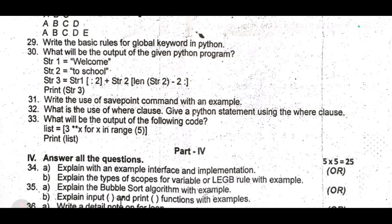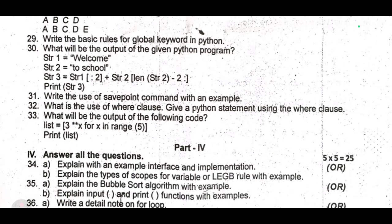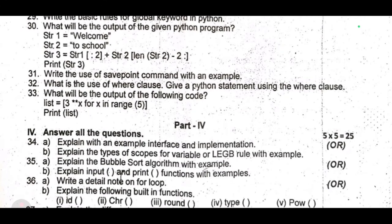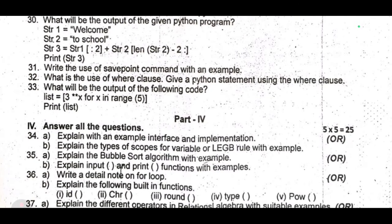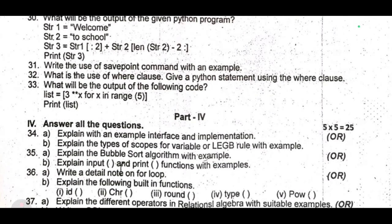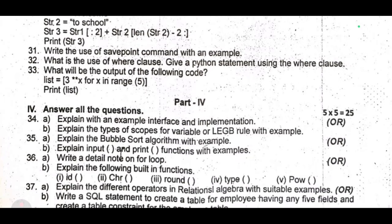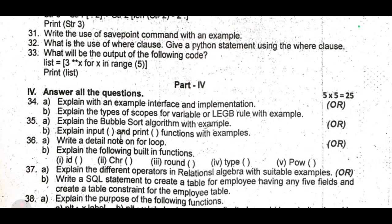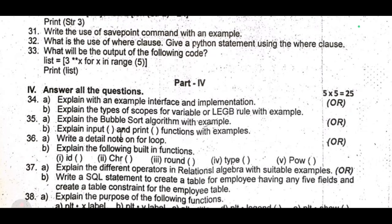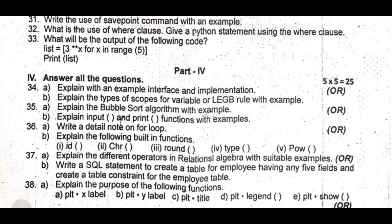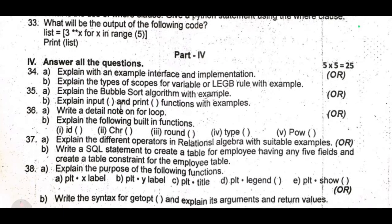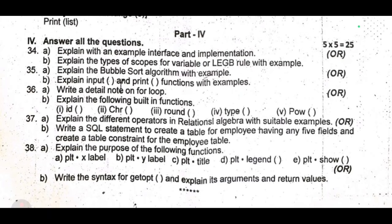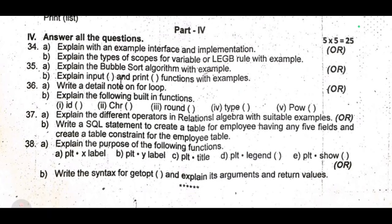These are the five-mark questions. Thirty-fourth: explain with an example — interface and implementation. Or, explain the types of scopes for variables or the LEGB rule. Thirty-fifth: explain the bubble sort algorithm with an example, or explain input and print functions. Thirty-sixth: write a detailed note on the following built-in functions: id, type, and bool. Thirty-seventh: explain the different operators in relational algebra with a suitable example, or write a SQL statement to create a table for an employee with five fields and create table constraints for the employee table. Thirty-eighth: explain the purpose of the following functions in matplotlib — xlabel, ylabel, title, legend, and show. Or, write the syntax for getopt, explain its arguments and return values.